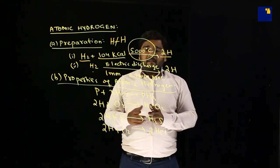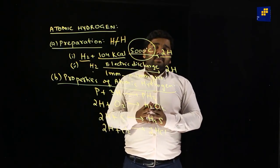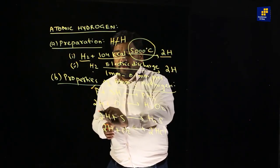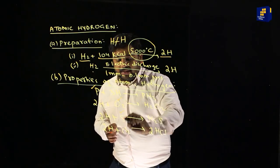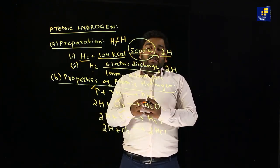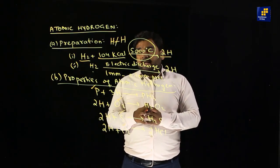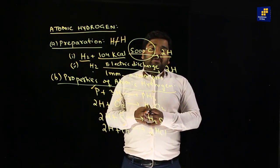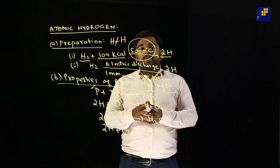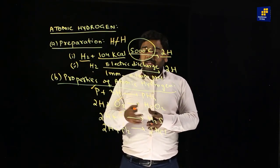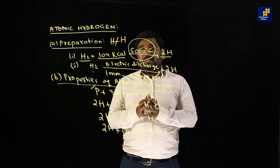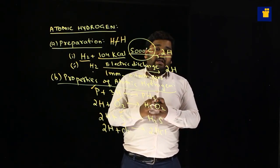Atomic hydrogen की properties भी exam में पूछी जाती हैं। यह phosphorus से react करता है, oxygen से react करता है, sulfur से react करता है, और chlorine से react करता है। जब यह phosphorus के साथ react करता है तो PH₃ form करता है, जब oxygen के साथ react करता है तो H₂O₂ यानि hydrogen peroxide बनाता है।